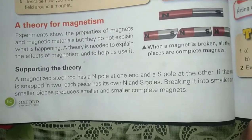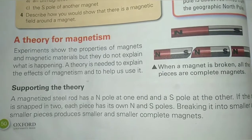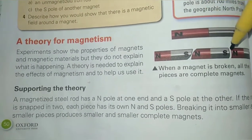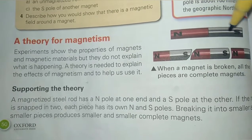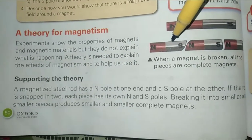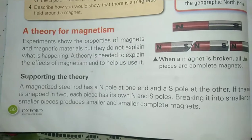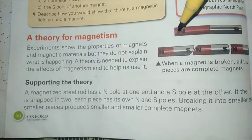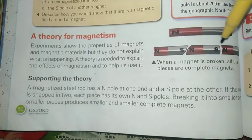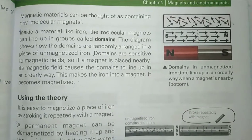Supporting the theory: a magnetized steel rod has a north pole at one end and a south pole at the other. If this steel rod is broken down into smaller pieces, each piece has its own poles. The steel rod is broken into three smaller pieces, and each piece has its own north and south pole. Breaking the magnetized steel rod into smaller and smaller pieces produces smaller and smaller complete magnets.